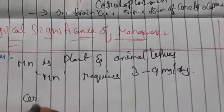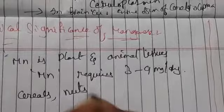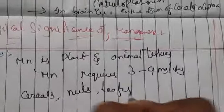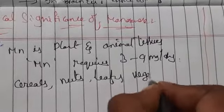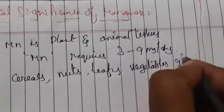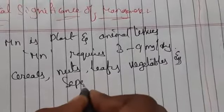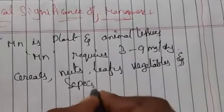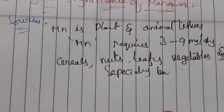The main sources of manganese are cereals, nuts, leafy vegetables, and especially tea.